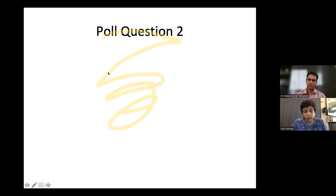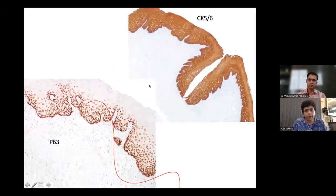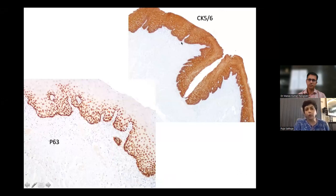The correct answer is nuclear p63. CK20 is a cytoplasmic stain seen in the lower GI tract. p40 is also a nuclear stain that stains squamous epithelium, but cytoplasmic p40 would be incorrect. Therefore, not all of the above. Cytoplasmic CK5-6 stains squamous epithelium; CK7 is in upper GI glandular epithelium; CK20 in lower GI glandular epithelium. p63 is nuclear; p40 is nuclear, staining squamous epithelium more intensely in the basal cells and also in superficial cells.